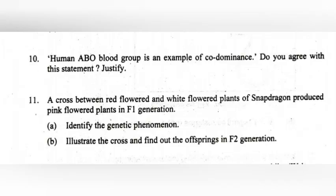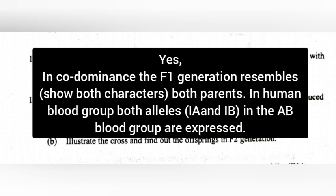10. Human ABO blood group is an example of codominance. Do you agree with this statement? Justify. Answer: Yes. In codominance, the F1 generation resembles both parents. In human blood groups, both alleles in the ABO blood group are expressed.